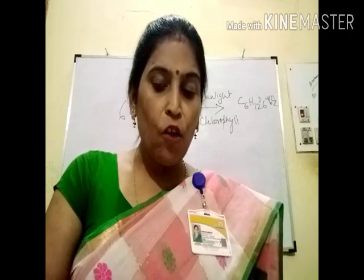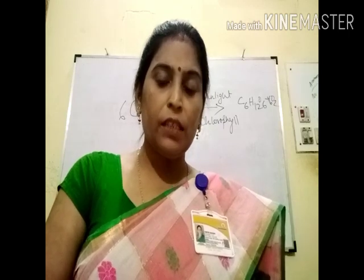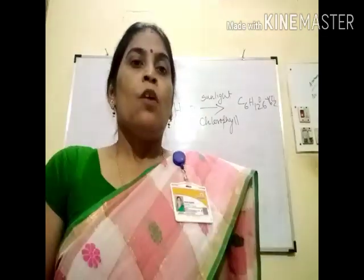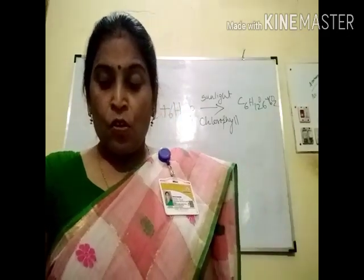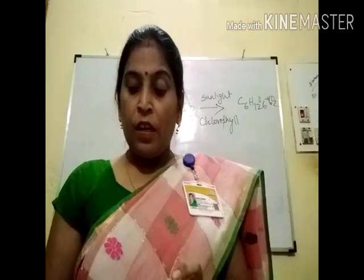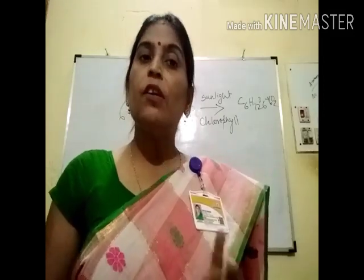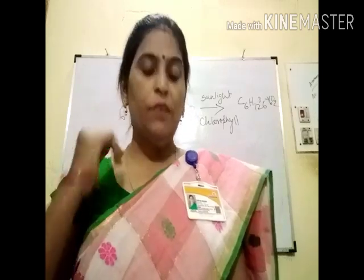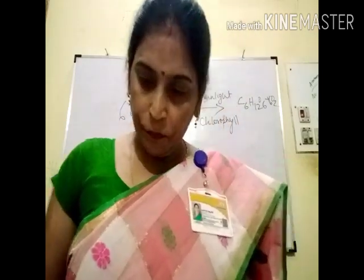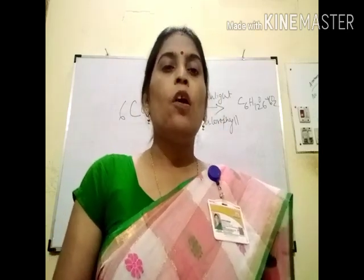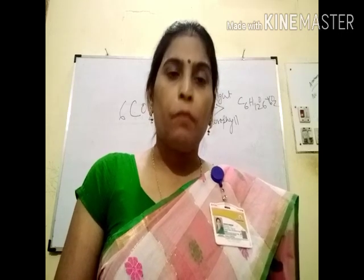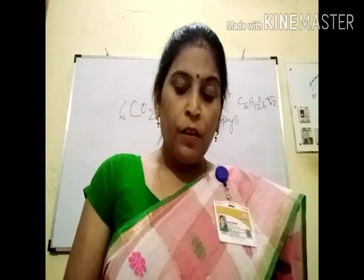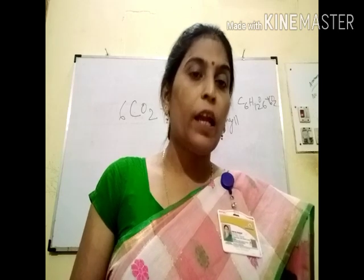Next question: explain the following with one example each. Parasitic nutrition: the mode of nutrition where organisms that live in or on other living organisms and derive their food from them are said to have parasitic nutrition. Example is dodder — a plant that sucks food from another plant using root-like structures. Symbiosis: the mode of nutrition where both organisms are mutually benefited. Example is lichen, in which algae supply food to the fungus and the fungus supplies water and minerals to the algae.